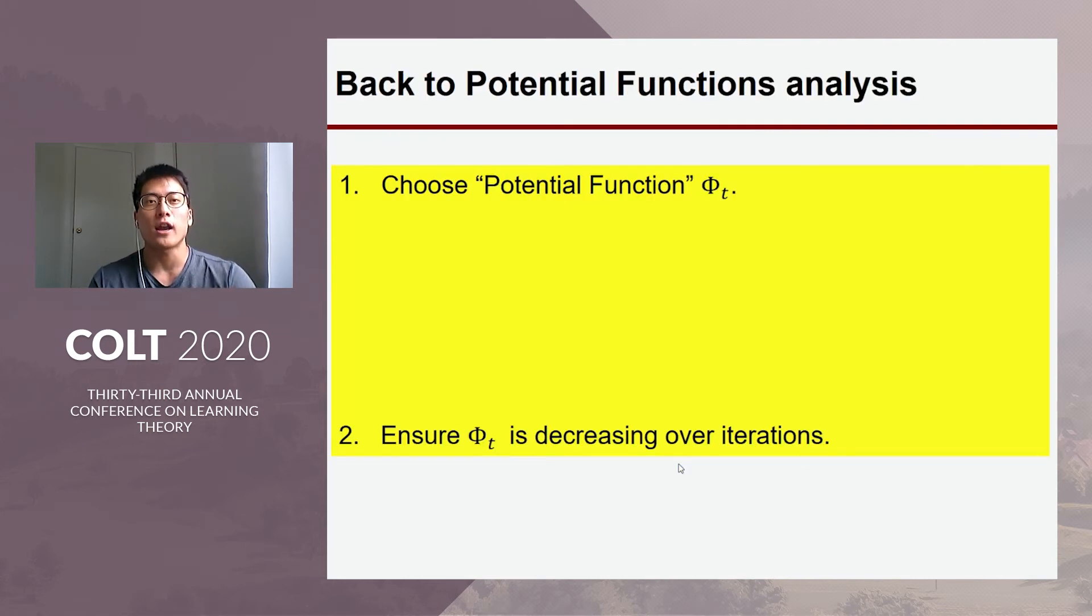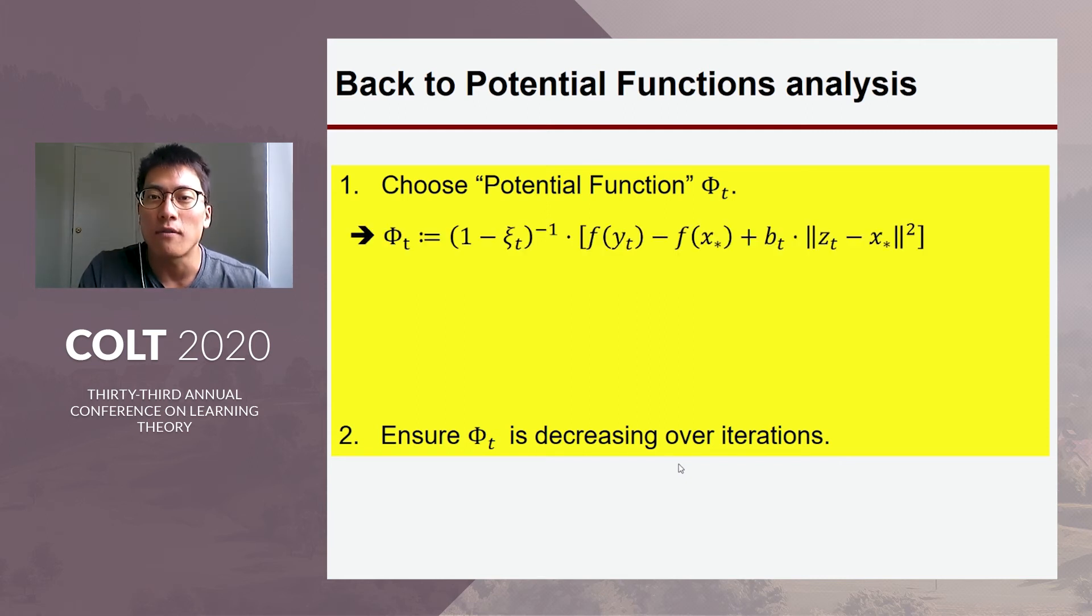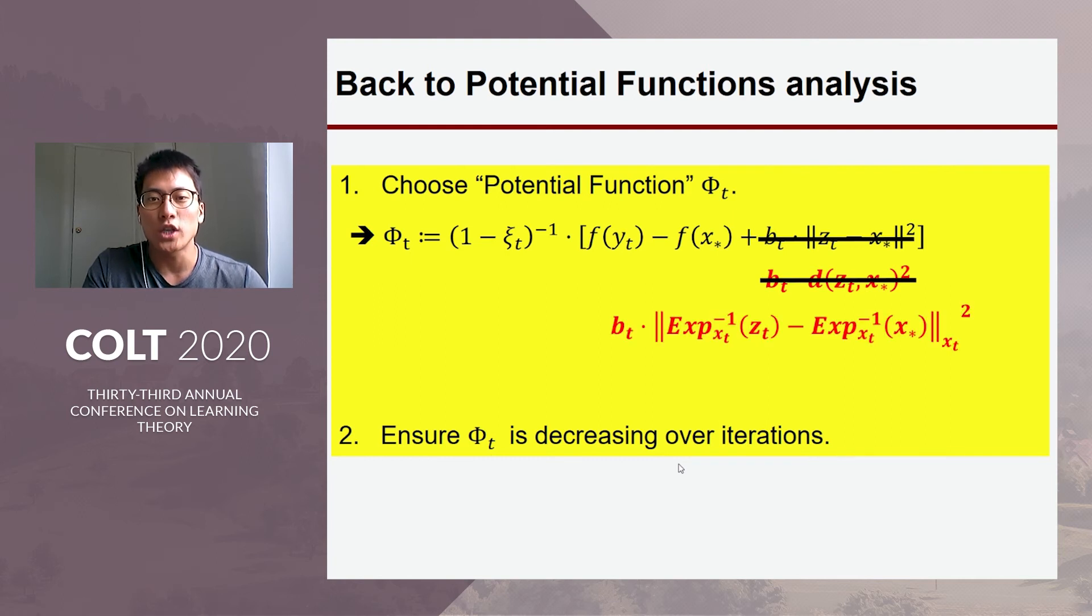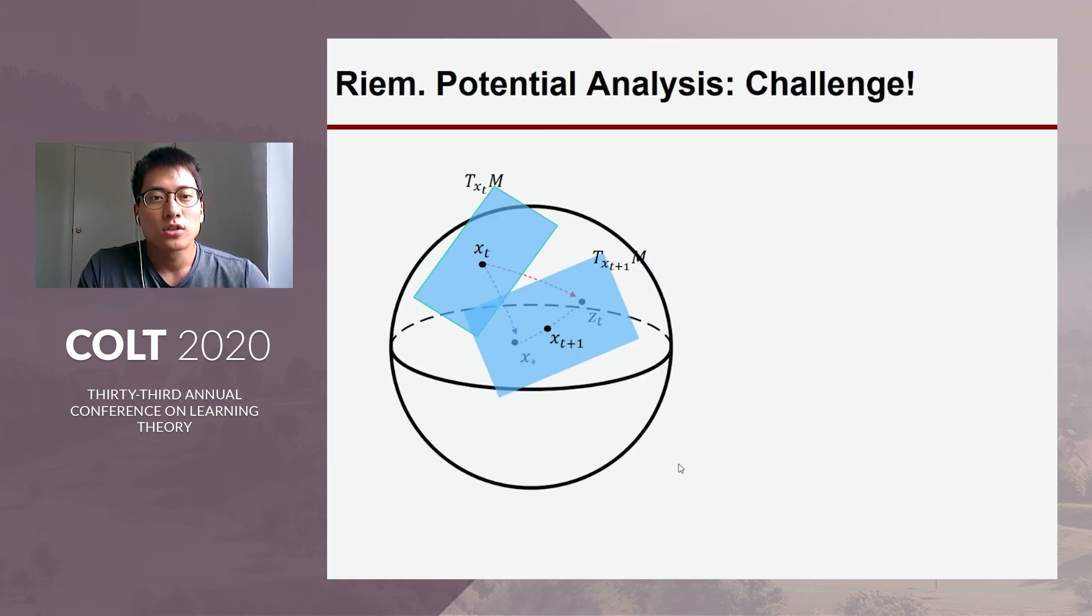So, we can also carry out the potential function analysis. So, it turns out for the distance part, you might be tempted to use Riemannian distance over the manifold, but it turns out it's not the right choice. We choose this projected distance which we denote by this distance and this choice is crucial for our analysis.